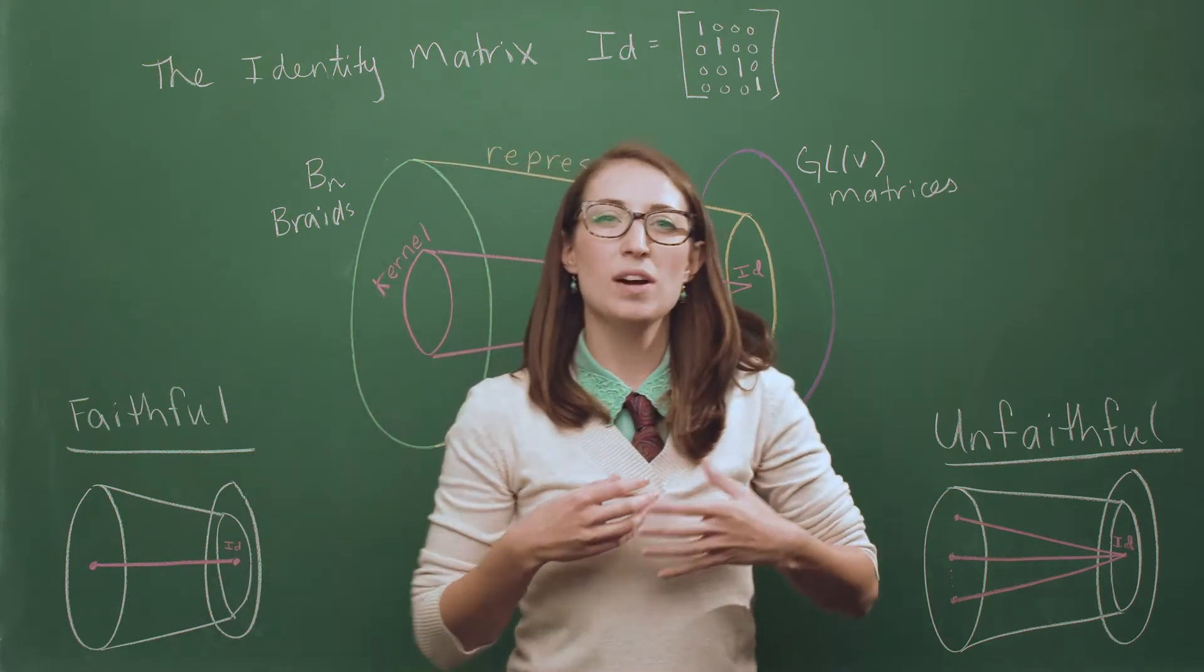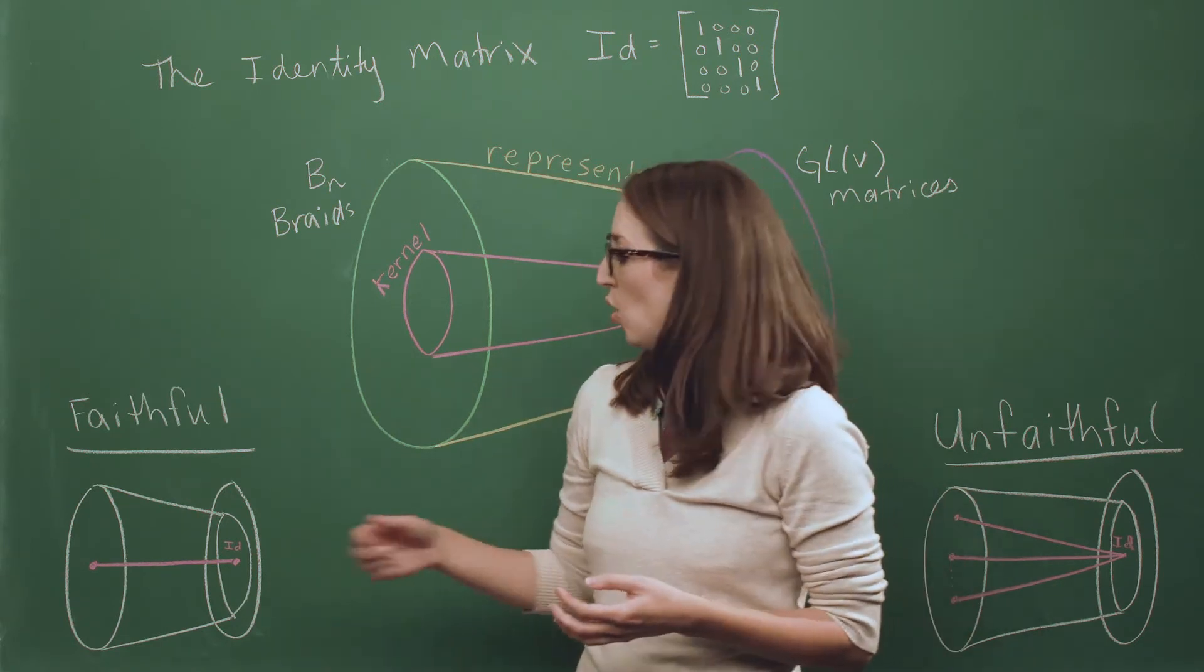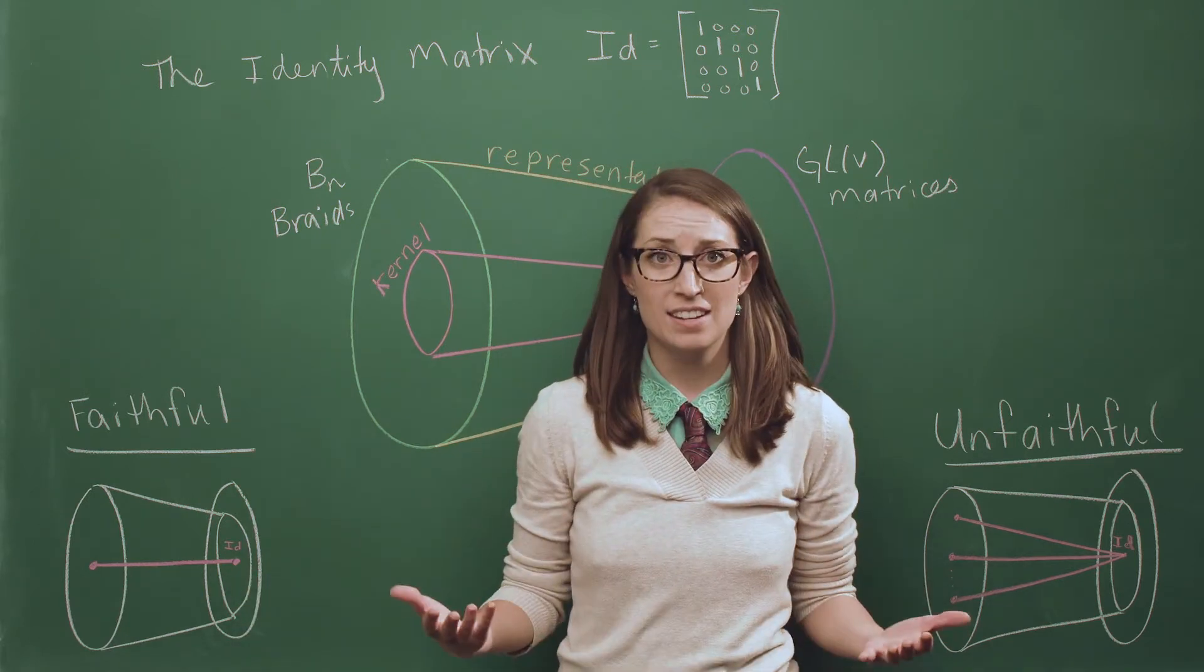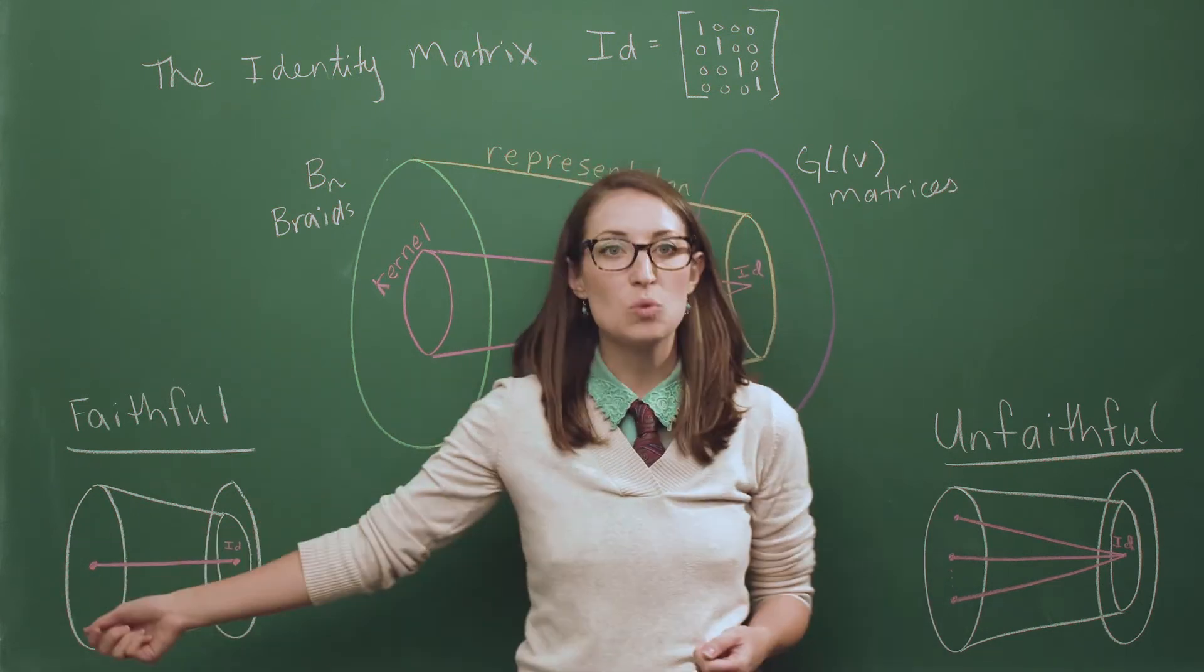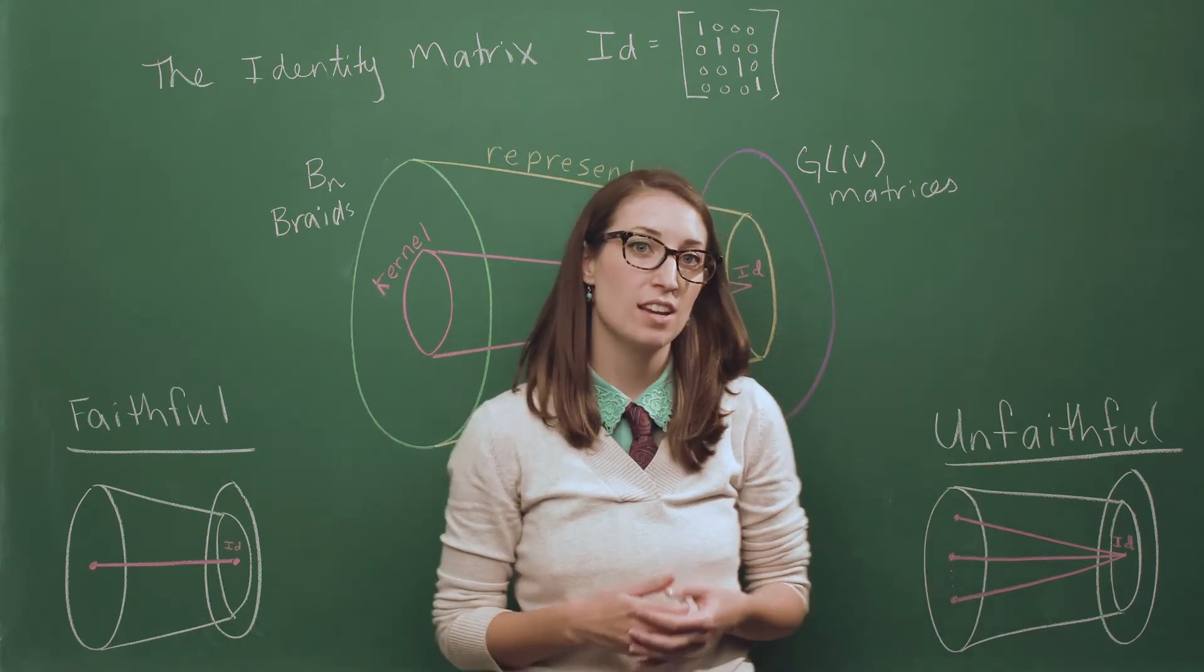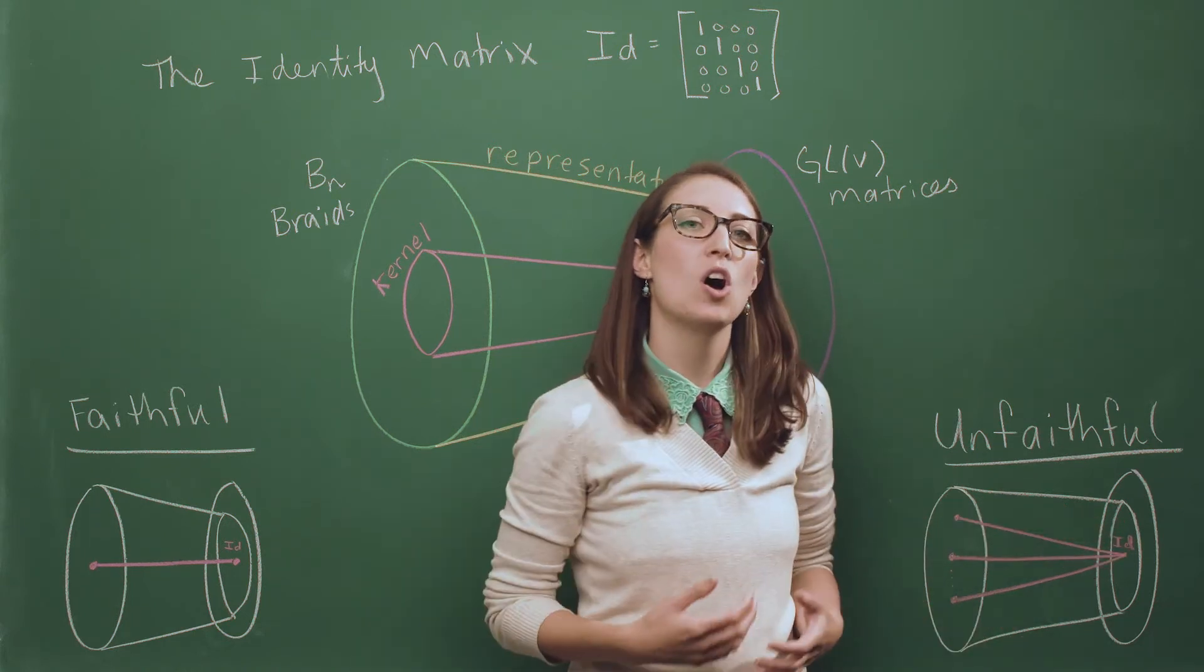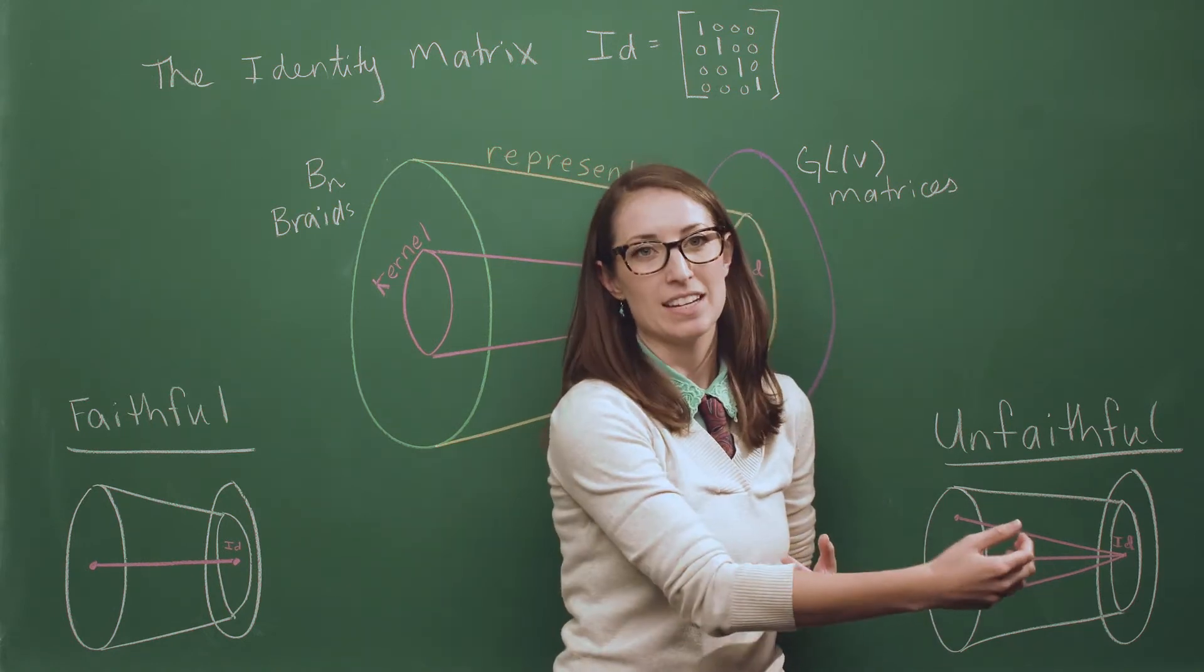And so if we want to say that a representation did a good job, or faithfully translated the information, all we do is look how big was the kernel. If there was only one braid that mapped to the identity matrix, then we say the representation was faithful. Because that means there wasn't much information lost. Only one braid was lost to the identity matrix. So we say it faithfully translated the information. However, if there were many braids that got mapped to the identity matrix, then all of those braids got lost in the translation. So it was a bad translation. So we would call that representation or that translation unfaithful because it didn't faithfully translate our information.